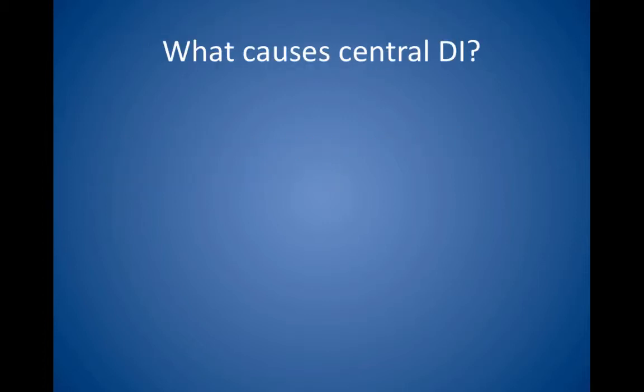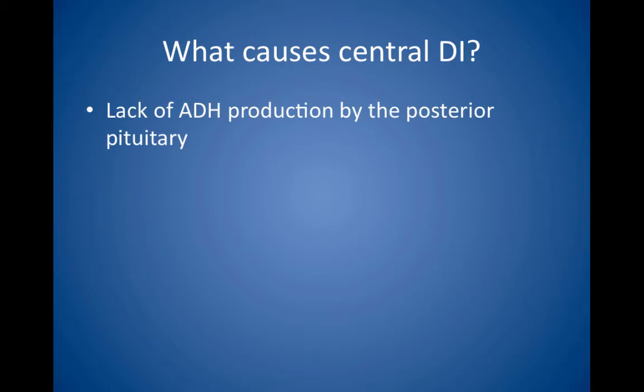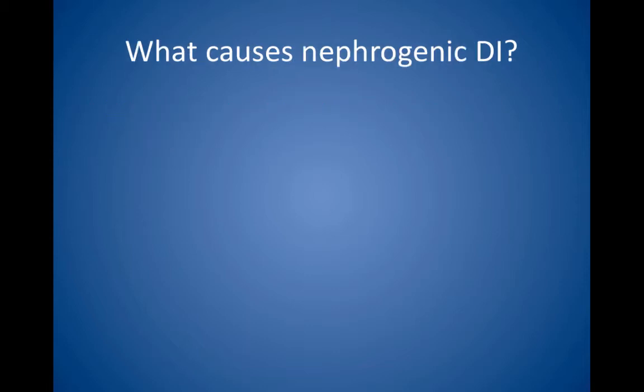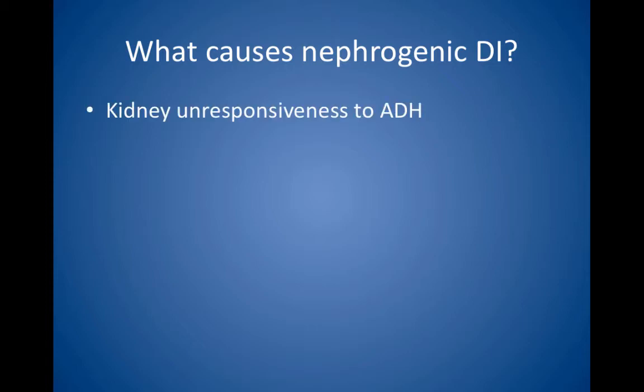What causes central diabetes insipidus? Central diabetes insipidus is caused by a lack of ADH production by the posterior pituitary gland. Although it is often idiopathic, look for trauma, neoplasm, or sarcoid or granulomatous disease as a cause. Order a CT or MRI scan of the head if indicated. What causes nephrogenic diabetes insipidus? Nephrogenic diabetes insipidus is caused by kidney unresponsiveness to ADH. Look for medications as the cause, especially lithium and demeclocycline.